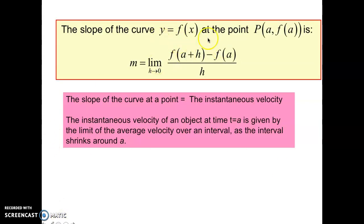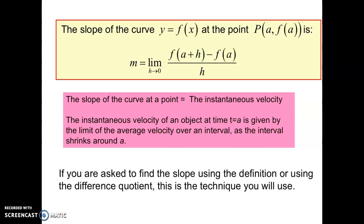Here's our formula reproduced again. The slope of the curve at a point is equal to the instantaneous velocity, if we're talking about velocity or change in position over change in time. Instantaneous velocity of an object at time equals A is given by the limit of the average velocity over that interval as the interval shrinks around A. So if you're asked to find the slope using the definition or the difference quotient, we're going to use this formula to find the slope of the curve, the instantaneous rate of change, the instantaneous velocity, or the slope of the tangent line to the curve at a given point.